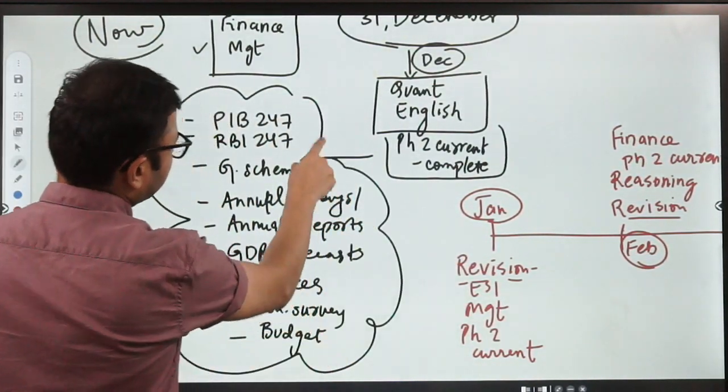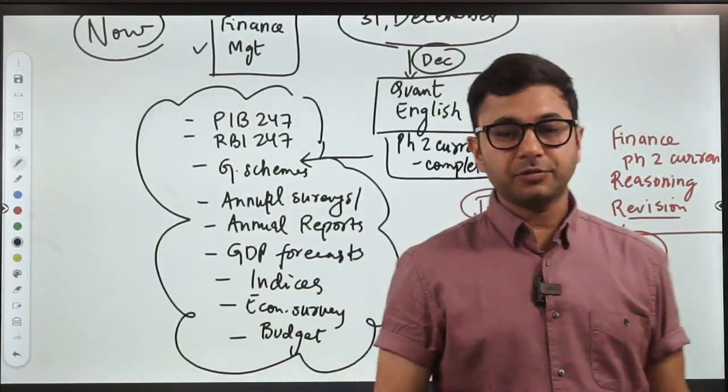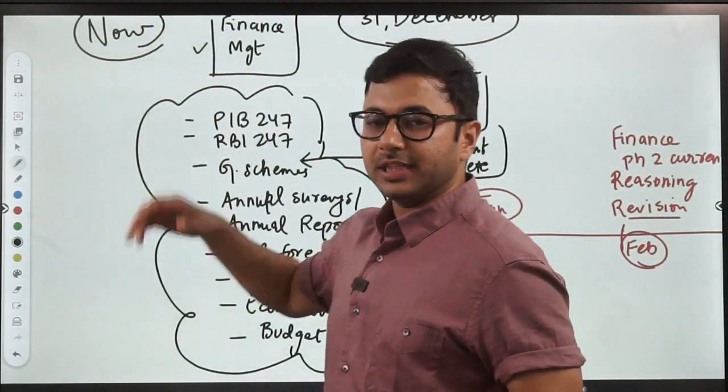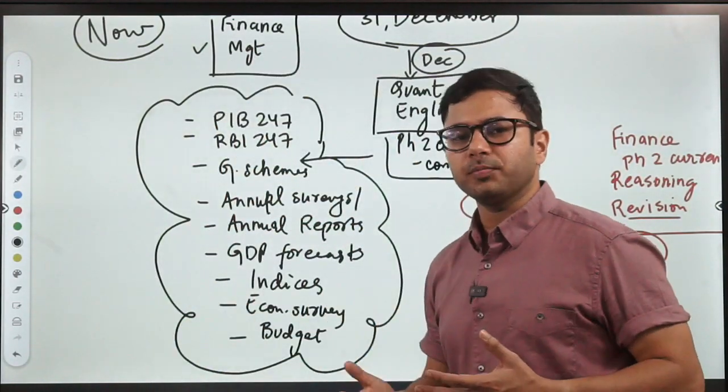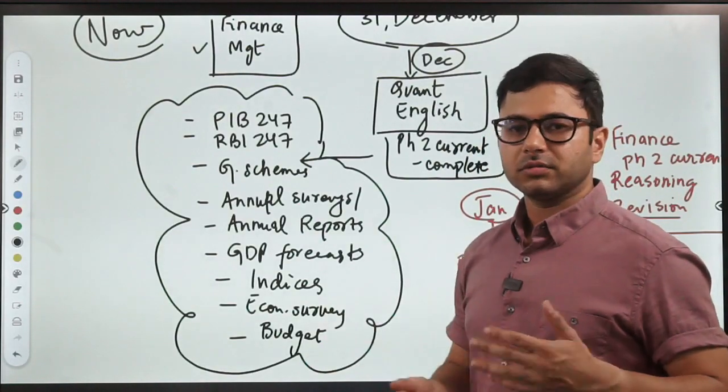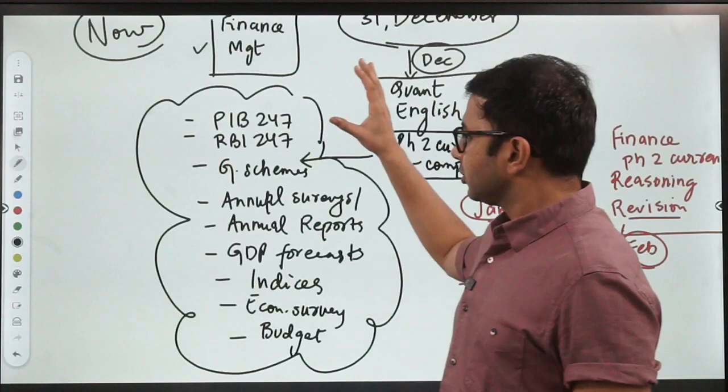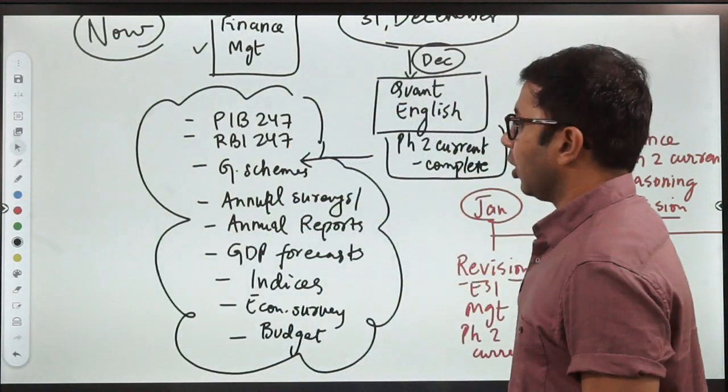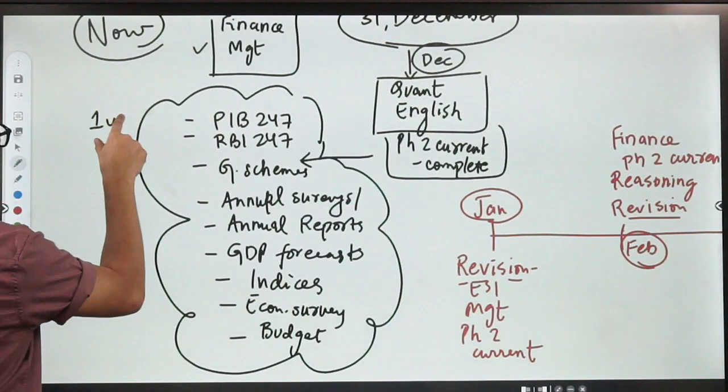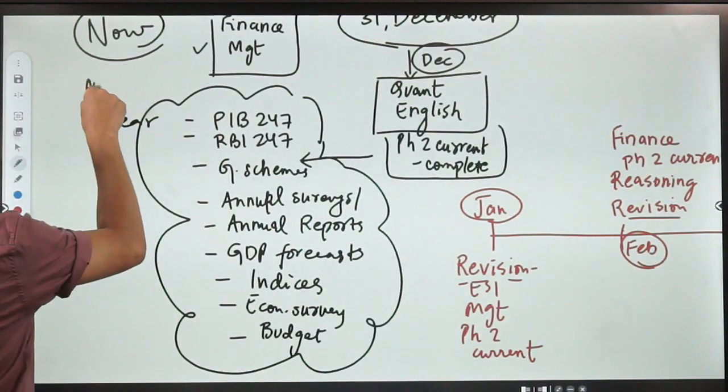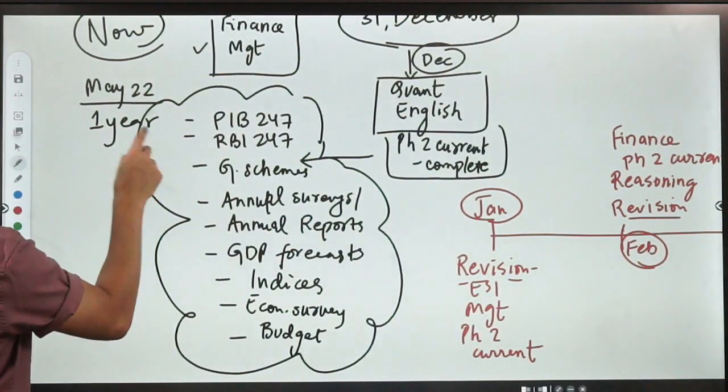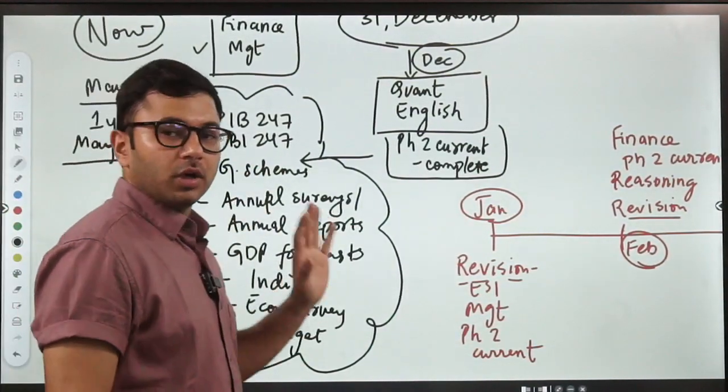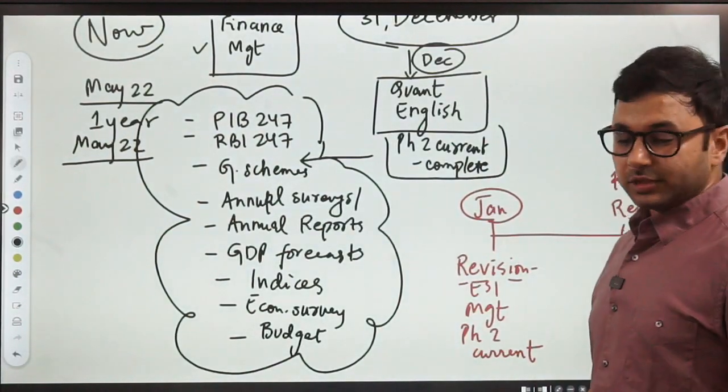This is an exhaustive list of current affairs that you have to cover for phase 2. This is all phase 2 only, nothing for phase 1. So phase 2 current you have to complete in December. Why do I keep it in December? Because quant and English are going to be easier compared to other subjects, less demanding. You can take more time to practice. But conceptual understanding won't take more than 10-15 days. So rest of the time you can use to cover these one by one. PIB 247 and RBI 247, one year from the examination. So you can probably start from let's say May 2022 to May 2023. And all these you have to cover complete documents.